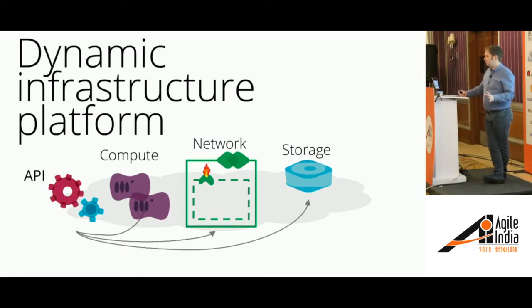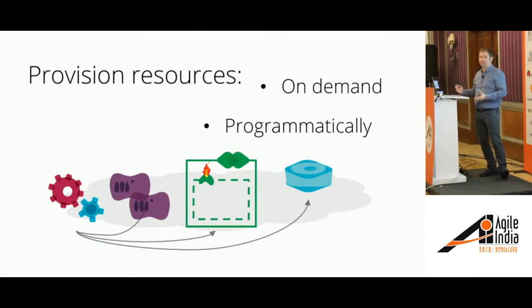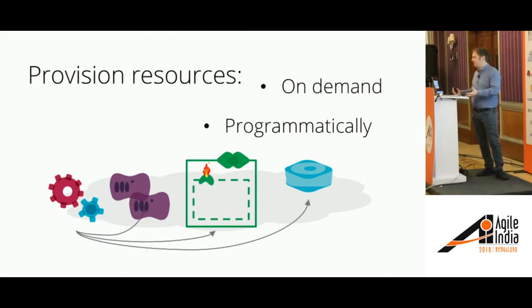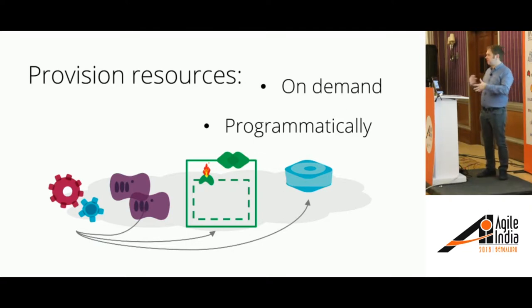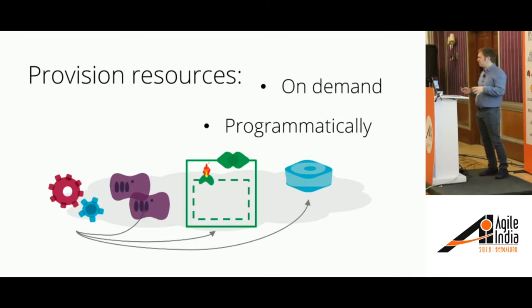The prerequisite to being able to do this kind of stuff is what I call a dynamic infrastructure platform — basically an API that lets you manage compute resources, network resources, storage, and so on. Cloud infrastructure as a service is the obvious example, but it doesn't have to be a cloud. You can do it with VMware virtualization, or even with physical infrastructure using tools like Foreman to automatically boot hardware and install OS images. It takes more work than cloud, but it is possible across various types of infrastructure, including platform-as-a-service, containers, and serverless.